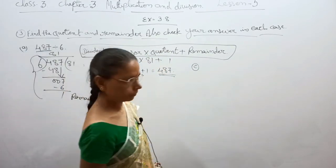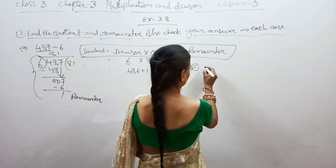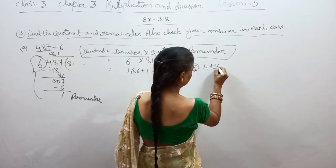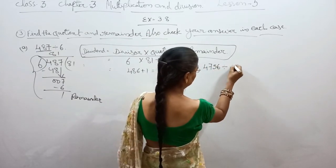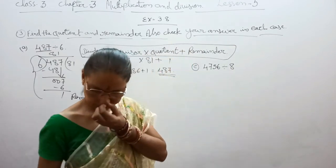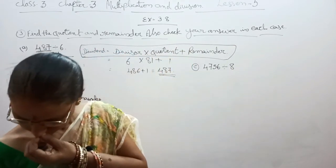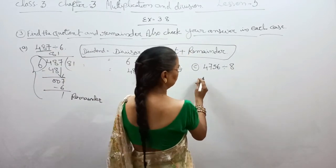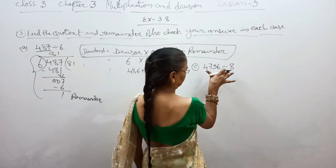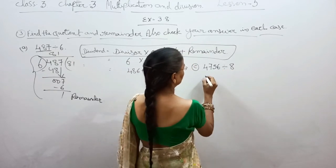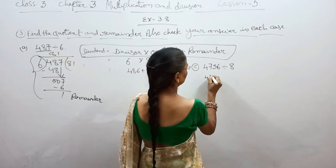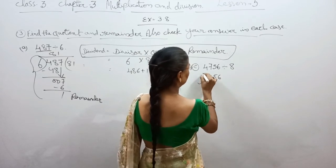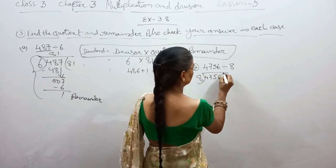The second question is 4756 divided by 8. Now we have to divide it using the long division method.